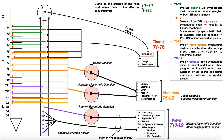The first region consists of preganglionic neurons originating from the T1 to T4 region of the spinal cord, and these are generally going to be components destined to go to the head. What these components do is jump on the arteries of the neck and follow them to the effector structures they innervate in the head. One of the arteries they travel next to is the internal carotid artery, so sometimes when there's an aneurysm of the internal carotid artery, one clinical manifestation is issues with the sympathetic nervous system on that side of the face — that's called Horner's syndrome, covered in a separate video.